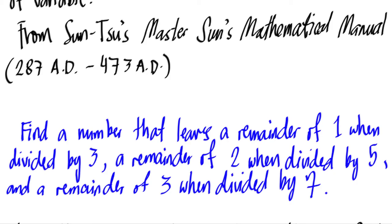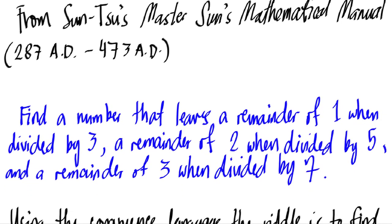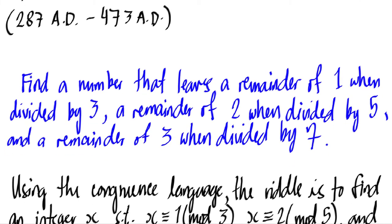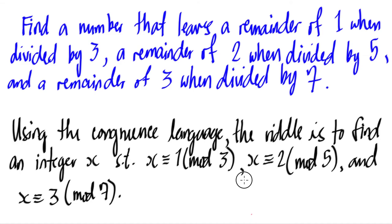Using the language that we have learned in the theory of congruences, one can convert these words into congruence symbols. When you say the first statement leaves a remainder of one when divided by three, using the congruence language, the riddle is to find the integer x where x first gives us a remainder of one when divided by three.